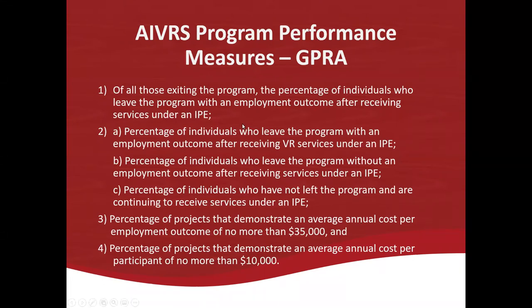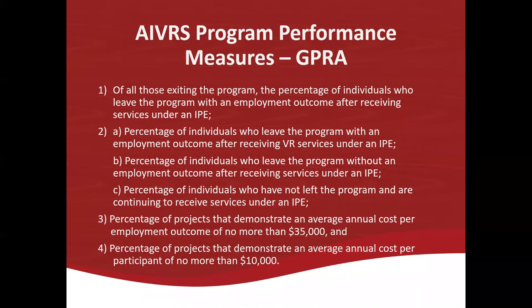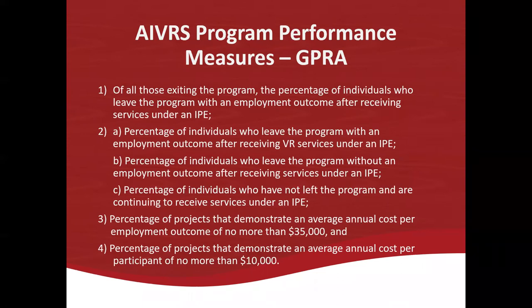Carol says all this information is available in their client database for items one and two. For items three and four she figured it out to see where they were — it's just the whole federal budget plus match divided by the number of people served that year. The same for the number of people successfully closed with employment. That's a simple math problem. She notes that items three and four have been reported at the five-year level, not annually, and checked with her state to confirm.